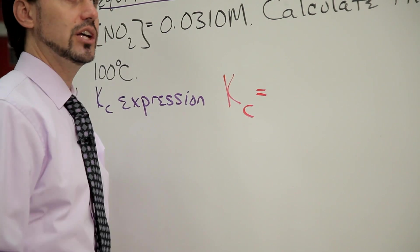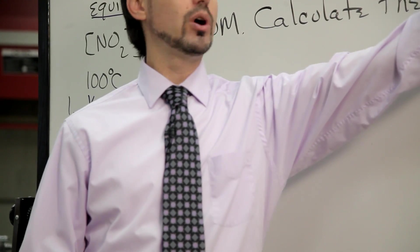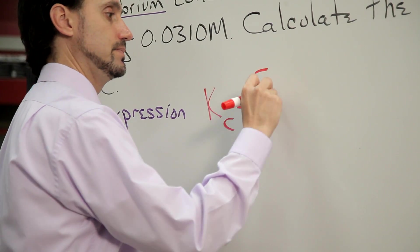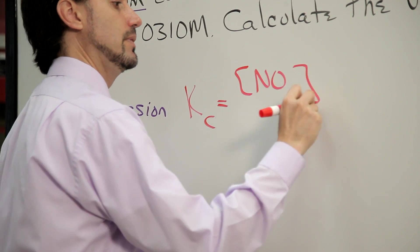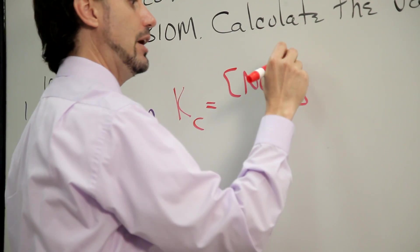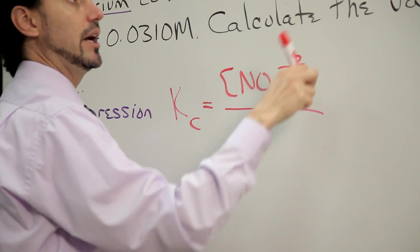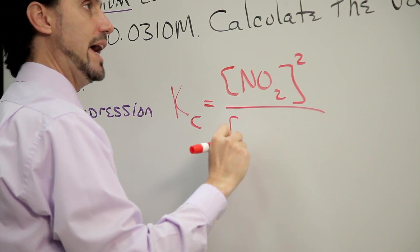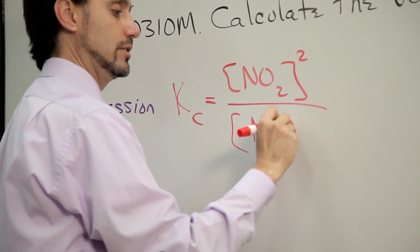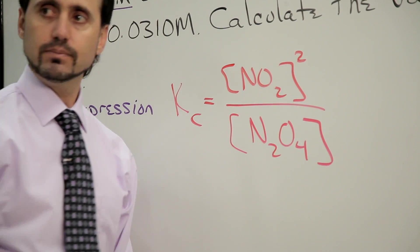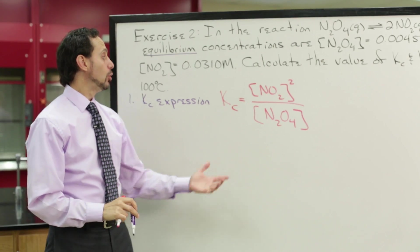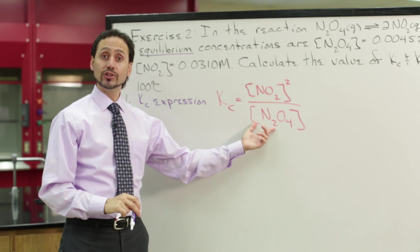k sub c equals the concentration of the products, that's NO2, raised to the second power, divided by the concentration of the reactants, N2O4. And that's it. So we've written the equilibrium constant expression.